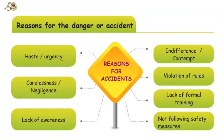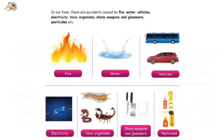In this lesson, we are going to learn how to be well informed and what kind of precautions we should take for safety measures. In our lives, there are accidents caused by fire, water, vehicles, electricity, toxic organisms, sharp weapons and glassware, pesticides, etc. These are the ways accidents can be caused.